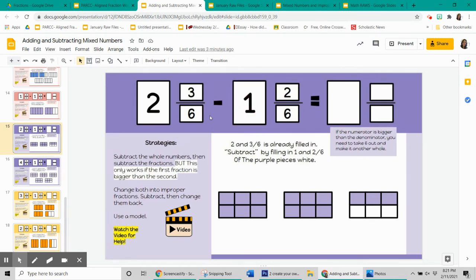2 minus 1 is the answer here, and then 3 minus 2 is the answer here. The denominator is going to stay the same. That strategy doesn't always work, so it's really good to know the other strategies.